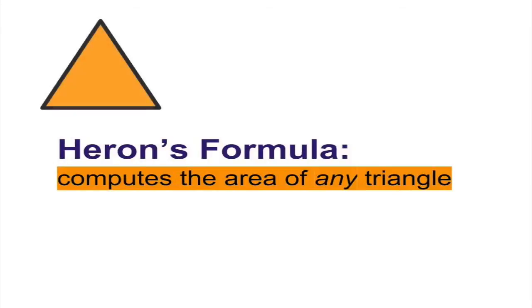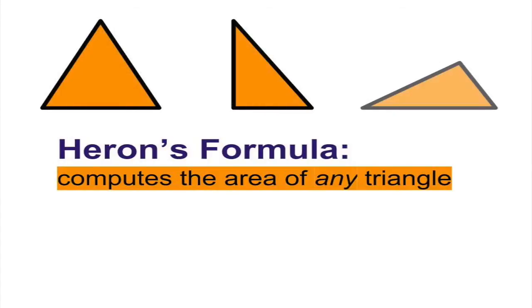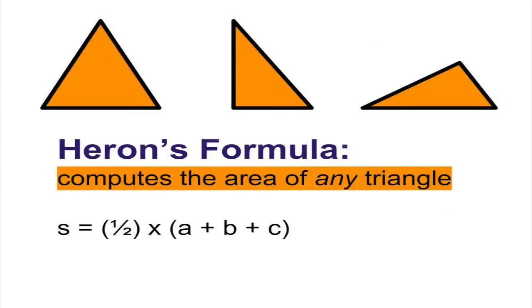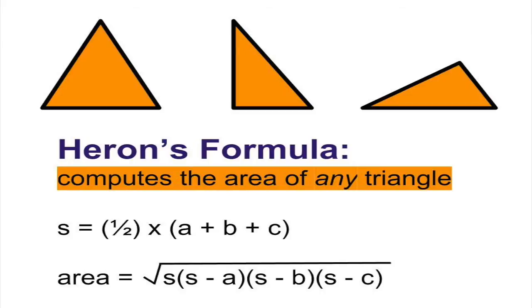We can find the area of any triangle by using Heron's formula. Let s equal one-half times each of the side lengths of the triangle. Then, we can compute the area as the square root of s times s minus side length a, s minus side length b, and s minus side length c.